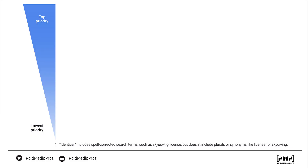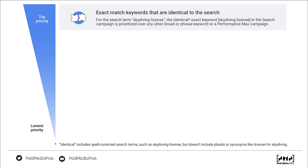I'm going to be walking through multiple different stages of the same graphic from Google Ads that's going to show us how each of these different keyword types are being prioritized. At the top you can see it is top priority; at the bottom, there's the lowest priority. The first and highest priority is going to be exact match keywords that are identical to the search. Any keyword that is exact match and matches perfectly to the search term being typed in has the highest priority of any keyword type in your account. Nothing will outrank it, and there are very few exceptions to when that will not show.